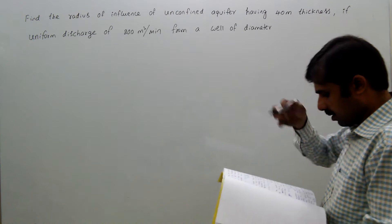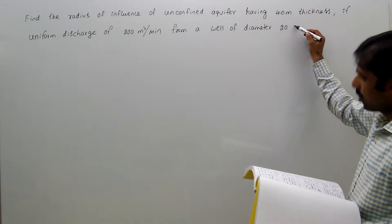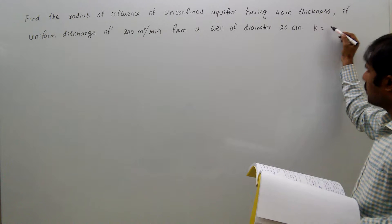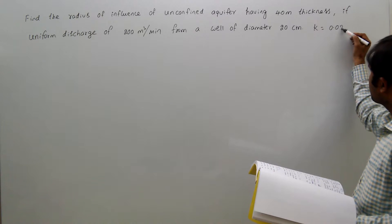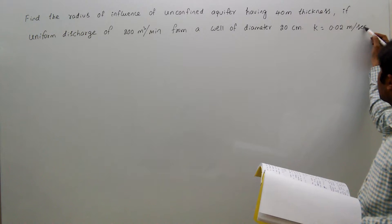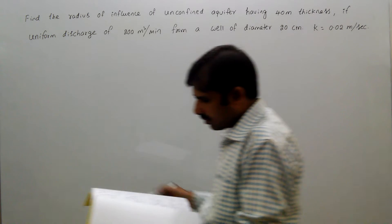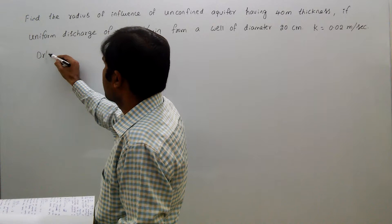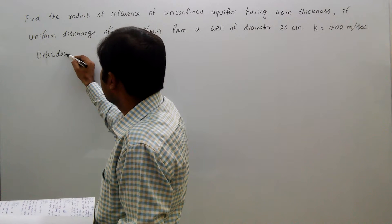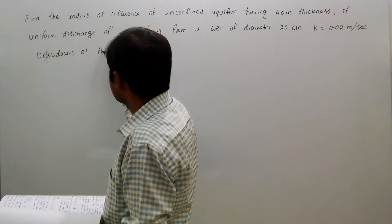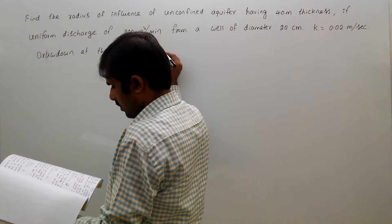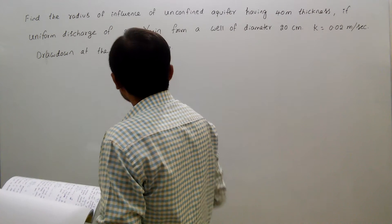From a well of diameter 20 centimeters, k equal to 0.02 meters per second, and drawdown at the well is 4 meters.